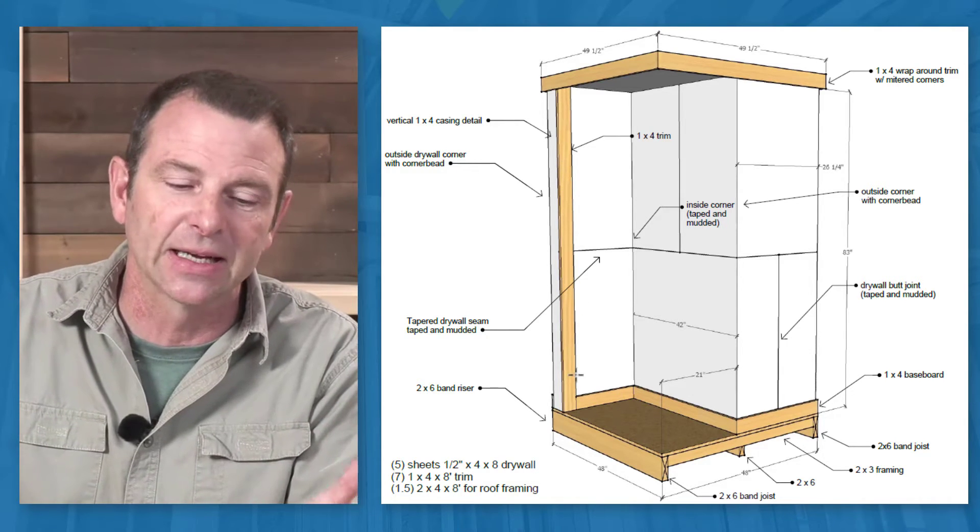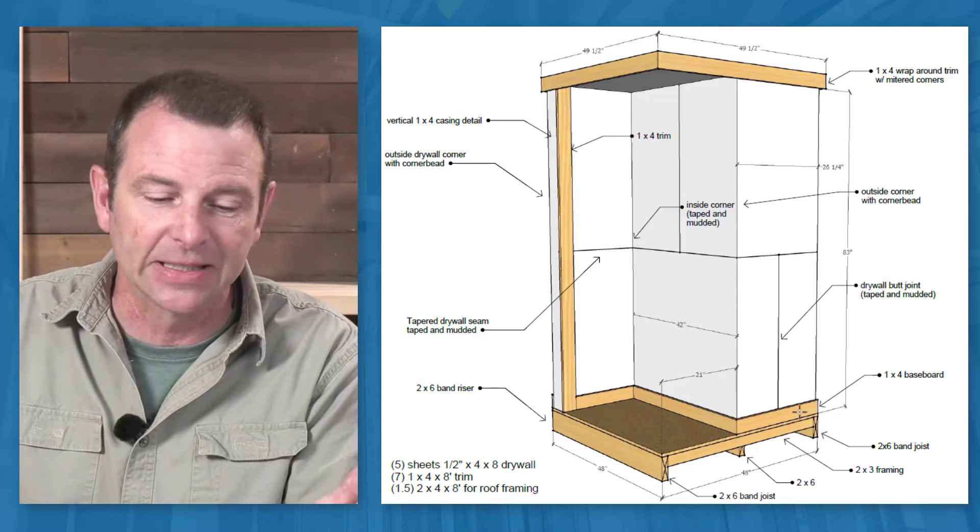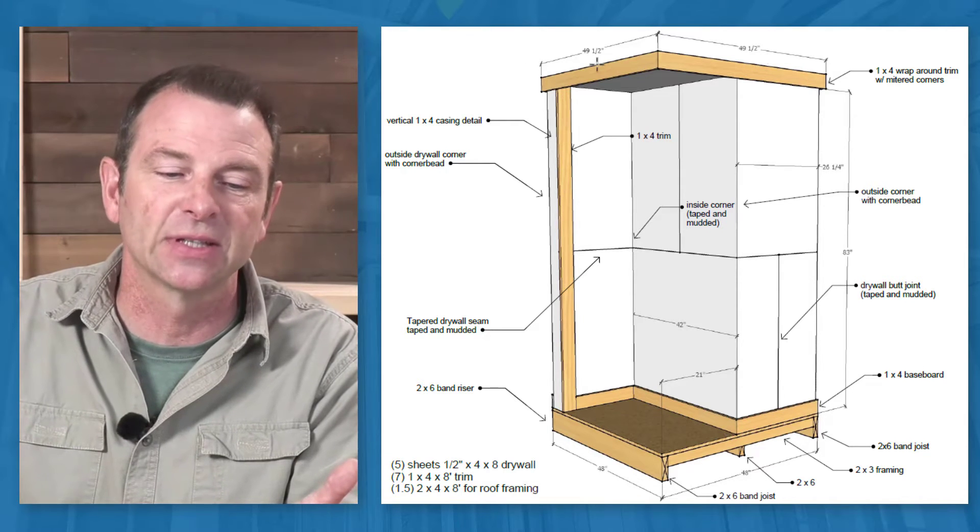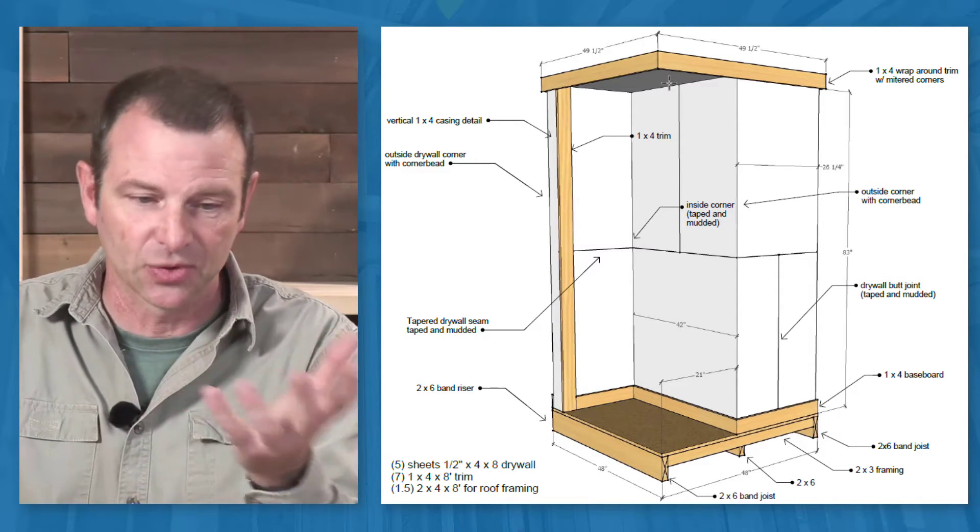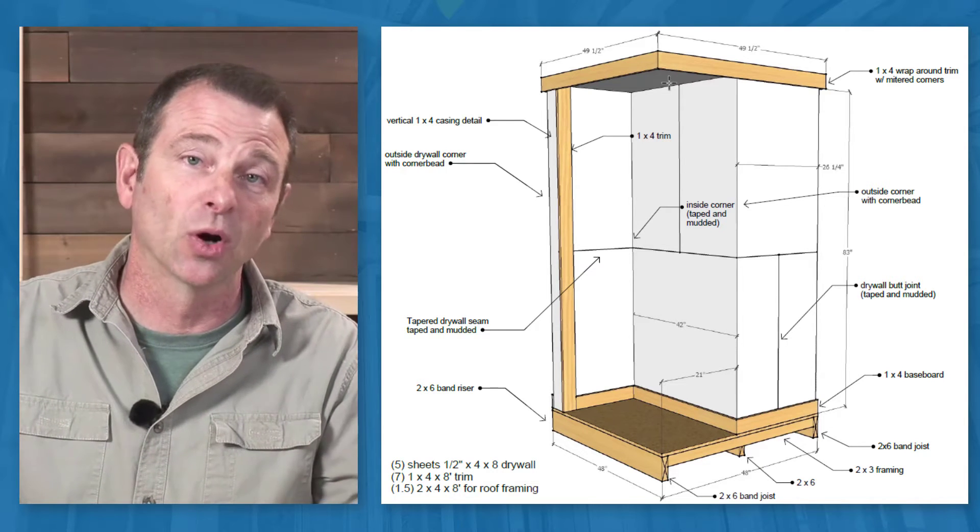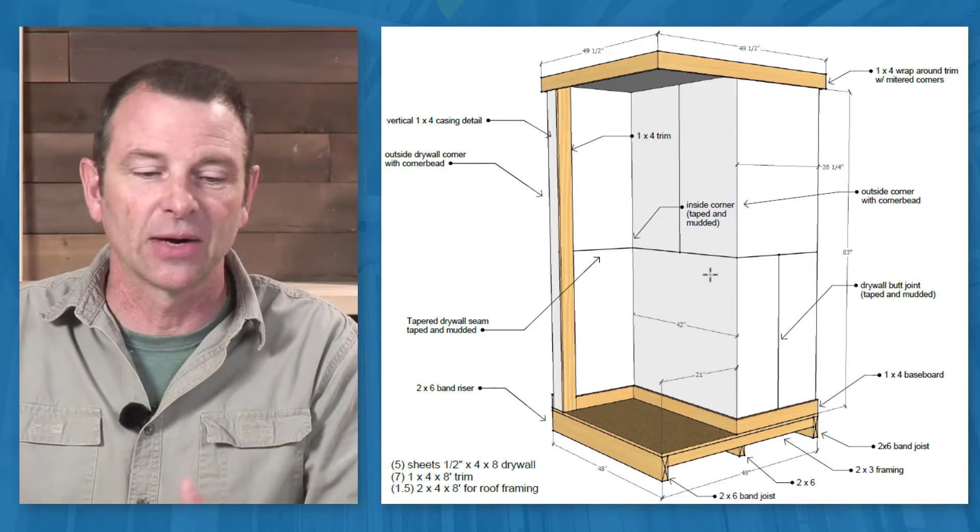The vertical one sort of mimicking a casing. You have some baseboard down here and even your ceiling structure was banded with some trim work that allowed the students to work on something other than just drywall.